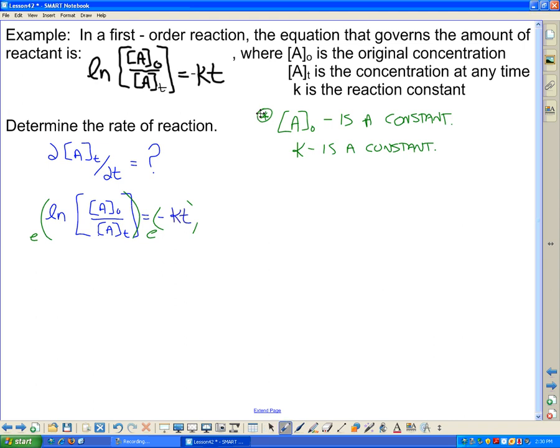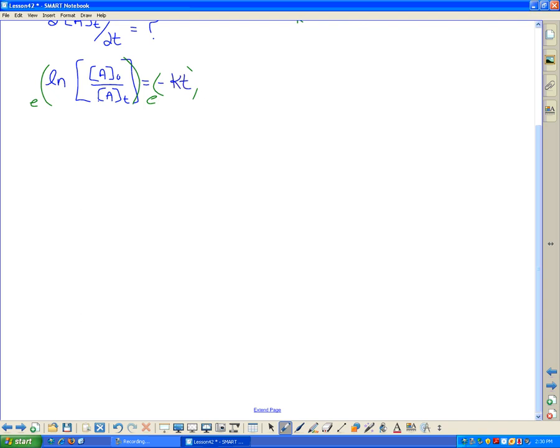And a natural log undoes e to the power. So I'm left with the concentration of A over the concentration A naught with concentration at any given time, and it's equal to e to negative kt.